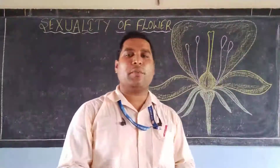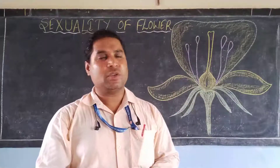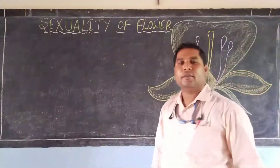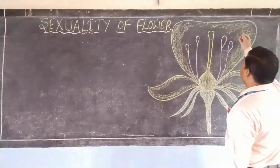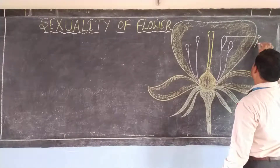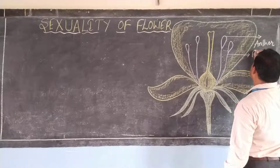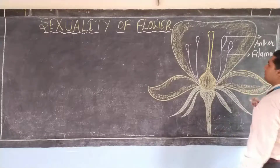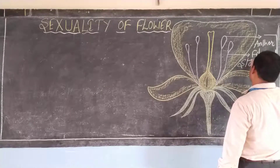Before I proceed to explain the types of flower according to the presence of male and female parts, first let us know which are the male parts and which are the female parts of the flower. This tip part you can see here is known as the Anther, and the string part is known as the Filament. Both together are known as a Stamen.